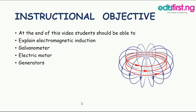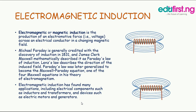A battery is a device consisting of one or more electrochemical cells with external connections for powering electrical devices such as flashlights, mobile phones and electric cars. A battery is usually composed of a series of cells that produce electricity. Each cell has three essential components: the anode, the cathode and the electrolyte.